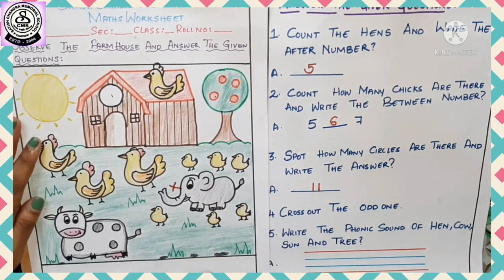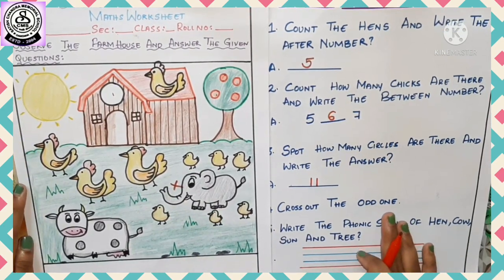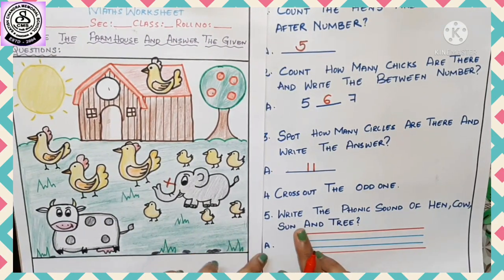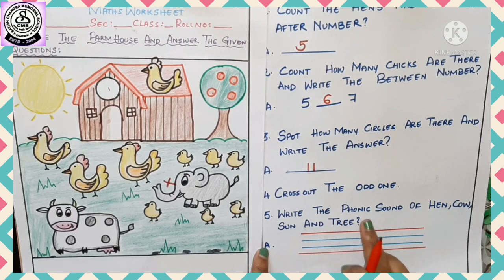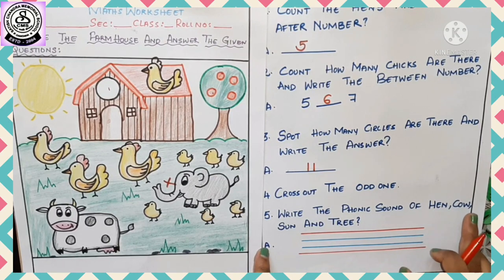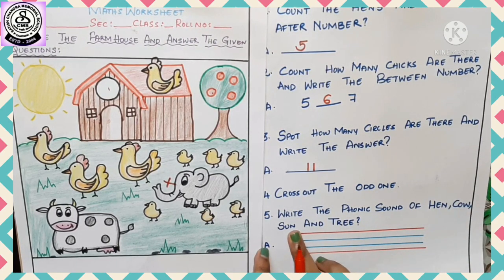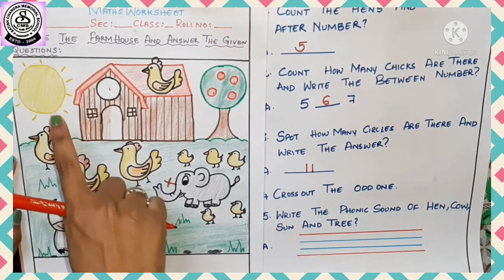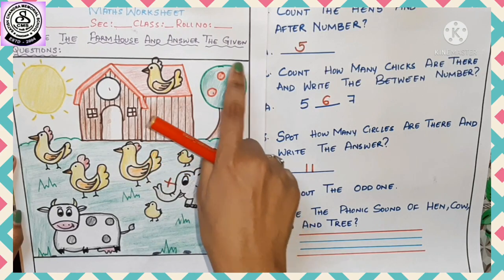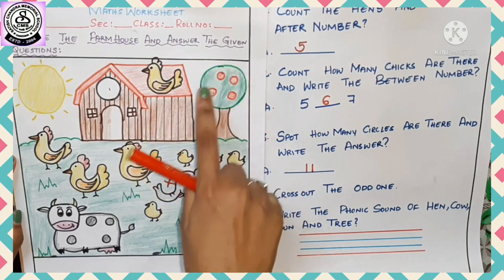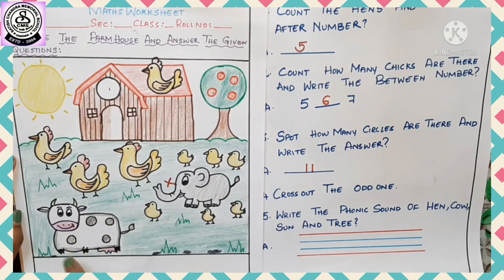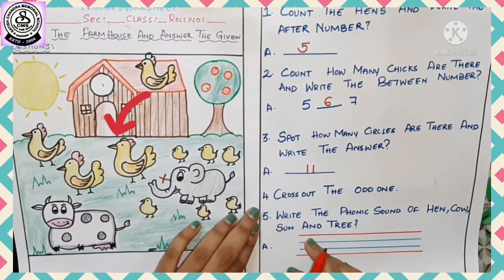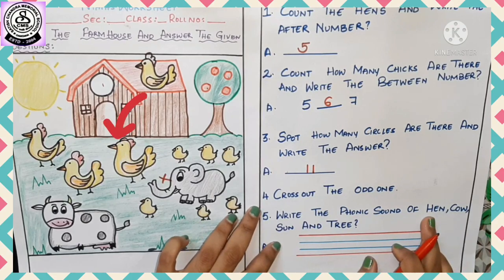Now let's move to our last question: write the phonic sound of hen, cow, sun, and tree. We will write the phonic sound of each. So what is the phonic sound of hen?